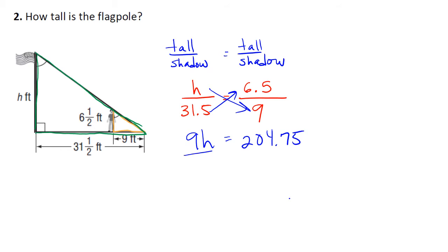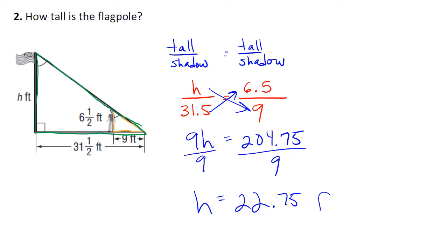Now we need to get h by itself — let's divide both sides by 9, giving us a grand total of 22.75 feet. So we can say that this flagpole in this illustration is 22.75 feet tall.